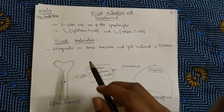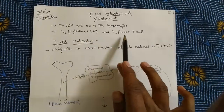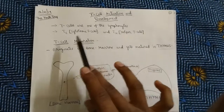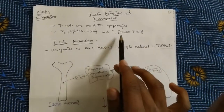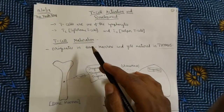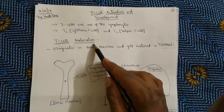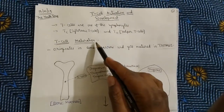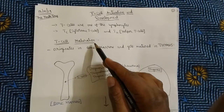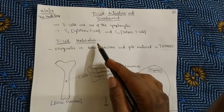Generally, T-cells are of two types: cytotoxic T-cells and helper T-cells, referred to as TC and TH respectively. Now we are going to discuss T-cell maturation — how they are born, where they are originated, and how they get matured.